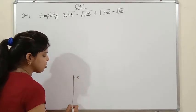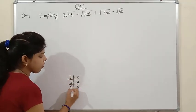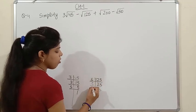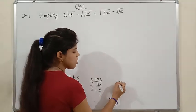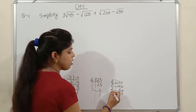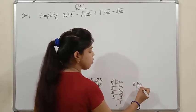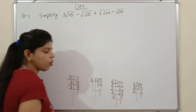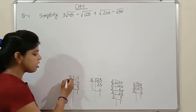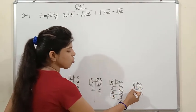Since we have square roots, we make pairs of factors (from Class 8 — squares and square roots chapter). For √45 = √(3×3×5): the pair of 3s comes out, leaving √5 inside. So √45 = 3√5. With the 3 already outside: 3×3√5 = 9√5. For √125 = √(5×5×5): one pair of 5s comes out, leaving √5. So √125 = 5√5.